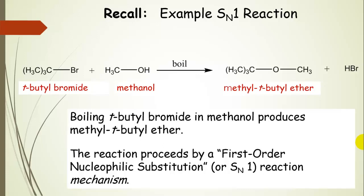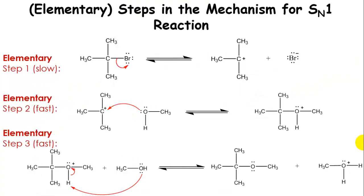As an example, we saw this in the very first presentation. We reacted T-butyl bromide with methanol in a boiling solution. We ended up with methyl T-butyl ether and hydrogen bromide. Remember, this was a first-order nucleophilic substitution reaction mechanism. So this is an example type of organic reaction mechanism.